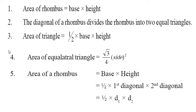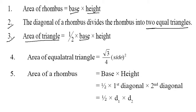Area of rhombus is equal to base into height. Always remember, diagonal of a rhombus divides the rhombus into two equal triangles. The area of the triangle is 1/2 base into height.